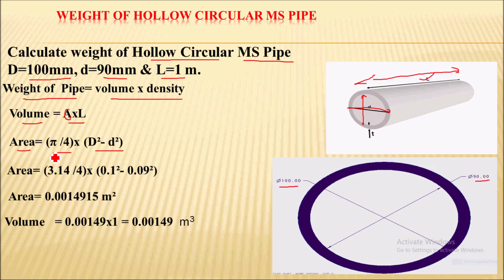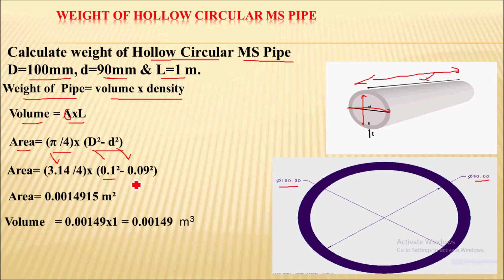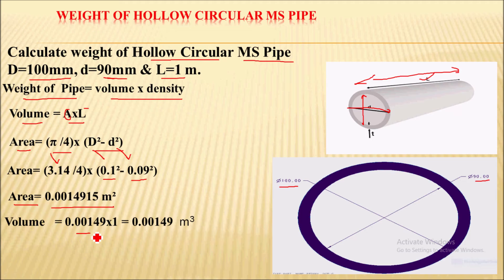The value of pi is 3.14. The value of D is 100 mm — converting to meters gives 0.1 m. The value of small d converting to meters gives 0.09 m. After solving this we get 0.0014915 meter squared as the area. We have length that is 1 meter, so after multiplying area with length we get the volume, that is 0.00149 meter cubed.